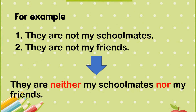Next, we have two more sentences: 'They are not my schoolmates' and 'They are not my friends' — mereka bukan rakan sekolah saya, mereka bukan kawan saya. To combine them, we use neither/nor: 'They are neither my schoolmates nor my friends' — mereka bukan rakan sekolah saya dan bukan juga kawan saya.